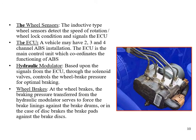The wheel sensor is usually of an inductive type. Wheel sensors detect the speed of rotation, wheel lock condition, and signal the ECU. A vehicle may have two, three, or even four channel ABS installations. The ECU is the main control unit coordinating ABS functioning. The hydraulic modulator, based on signals from the ECU, controls wheel brake pressure through solenoid valves for optimal braking. The wheel brakes receive braking pressure from the hydraulic modulator, forcing the brake linings against the brake drums.